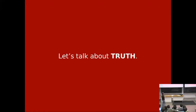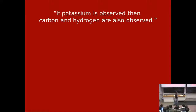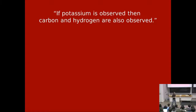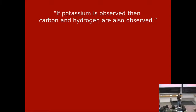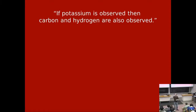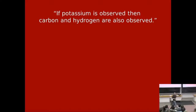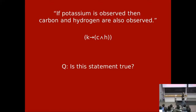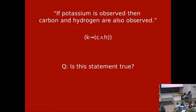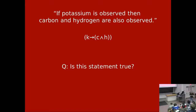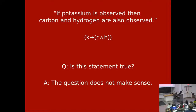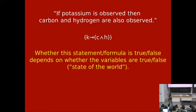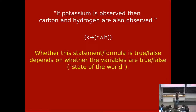Now let's talk about truth and falsity. Take the English sentence: 'If potassium is observed, then carbon and hydrogen are also observed.' How would we convert this into a propositional formula? K implies C and H — great. Is this statement true? The answer is: it's a trick question. You cannot ask if a formula is true — that does not make sense. Whether or not it's true depends on the state of the world, specifically on whether carbon was actually observed. To evaluate the compound formula we need to know whether the individual variables K, C, and H are true or false.